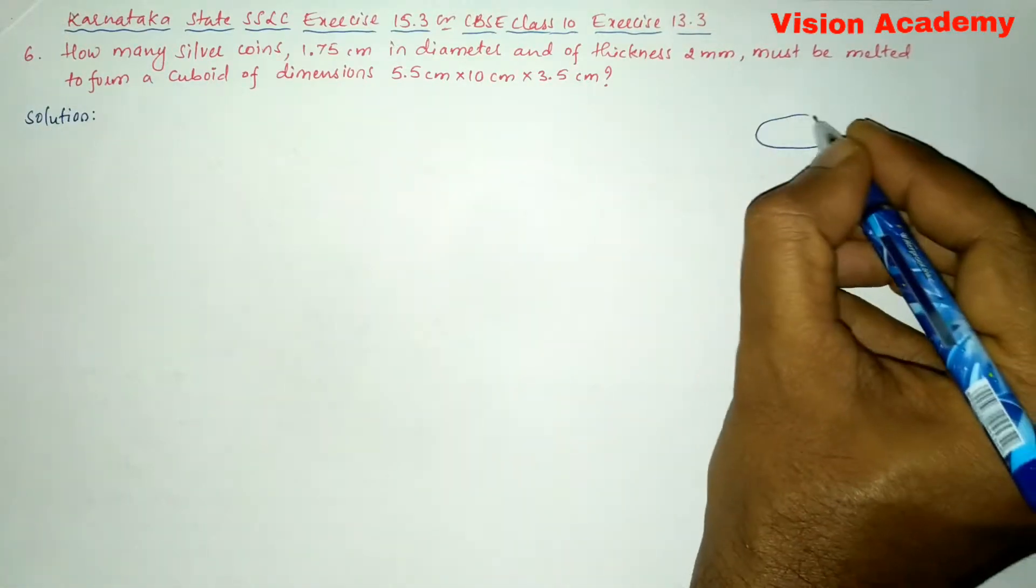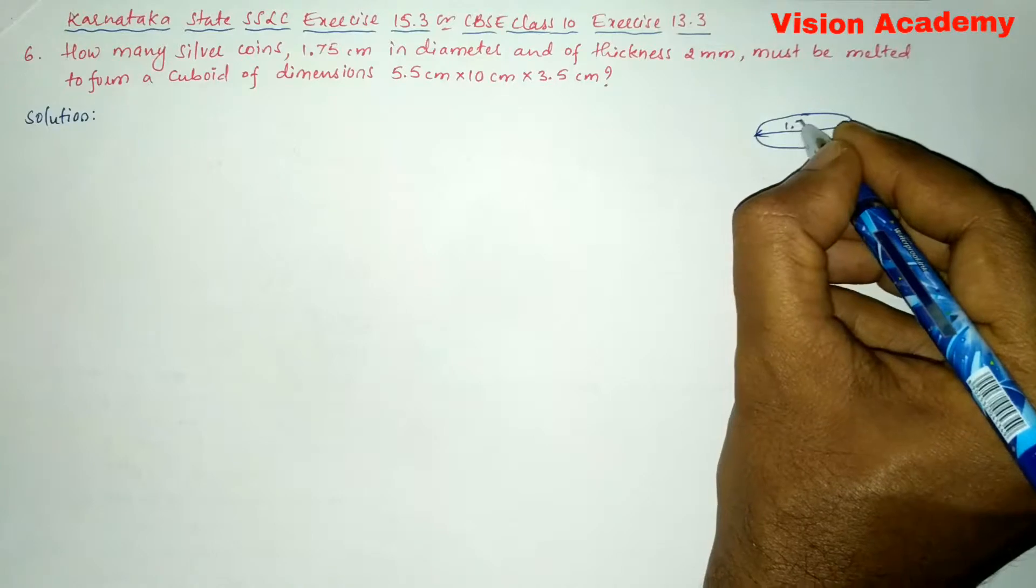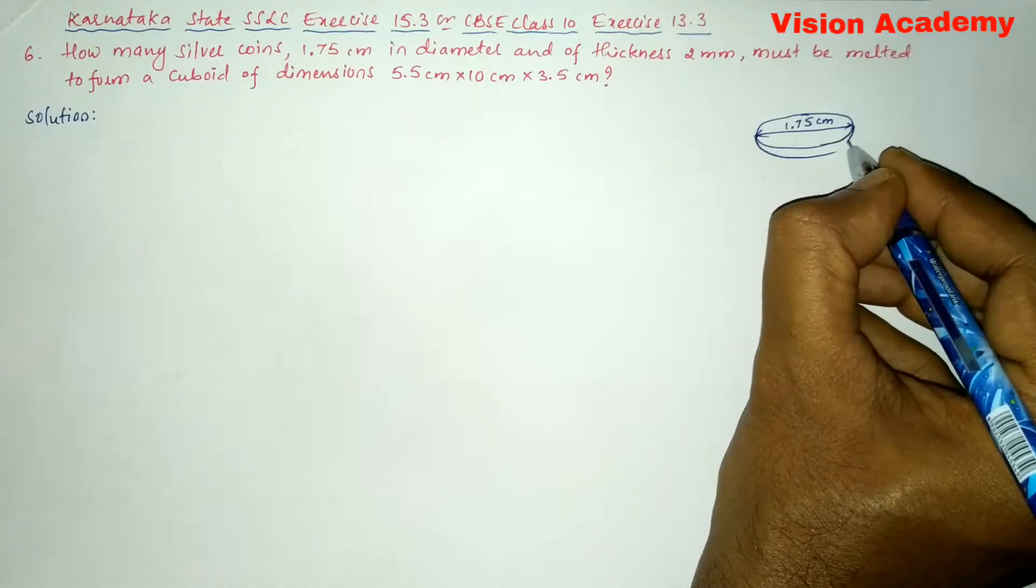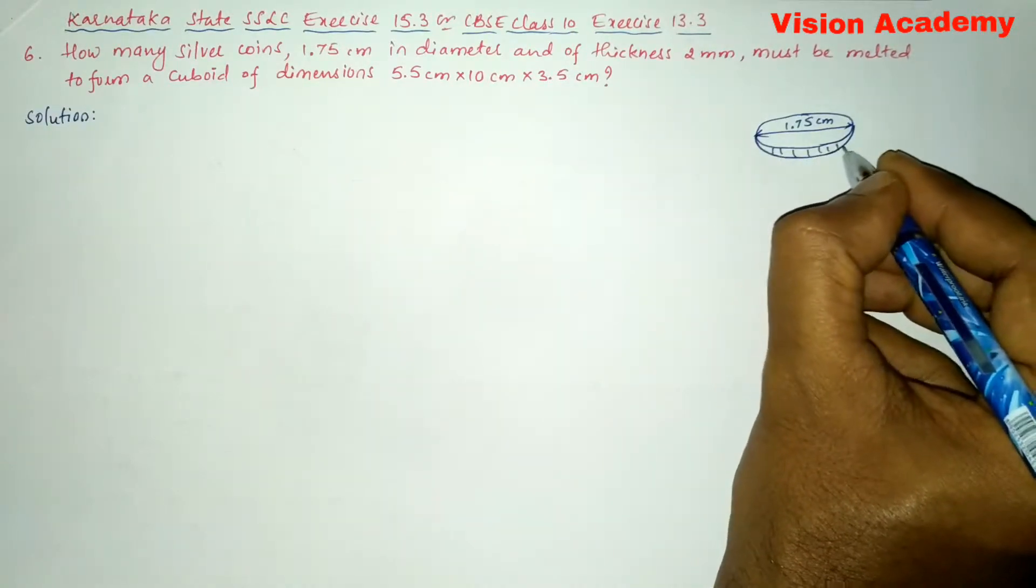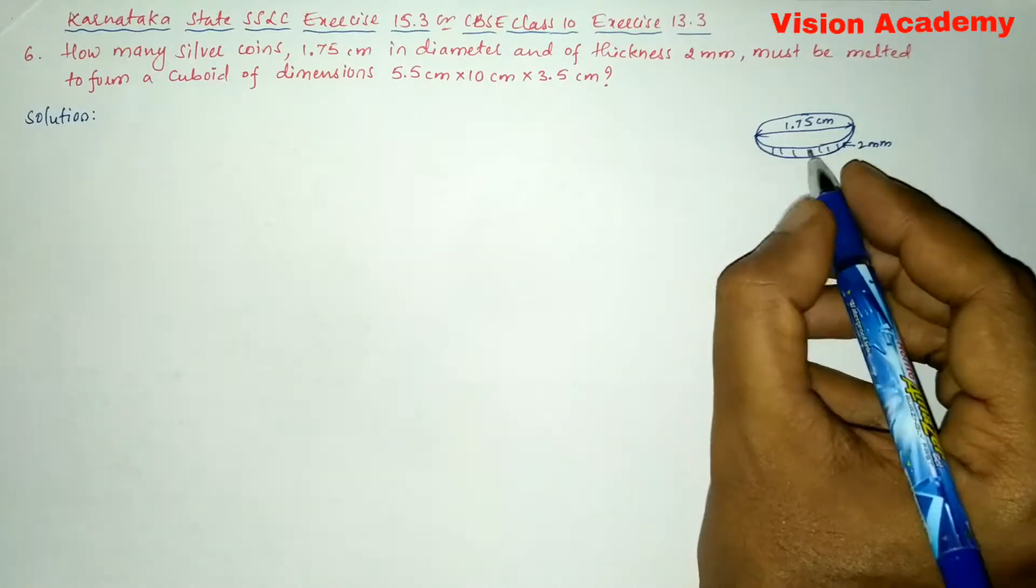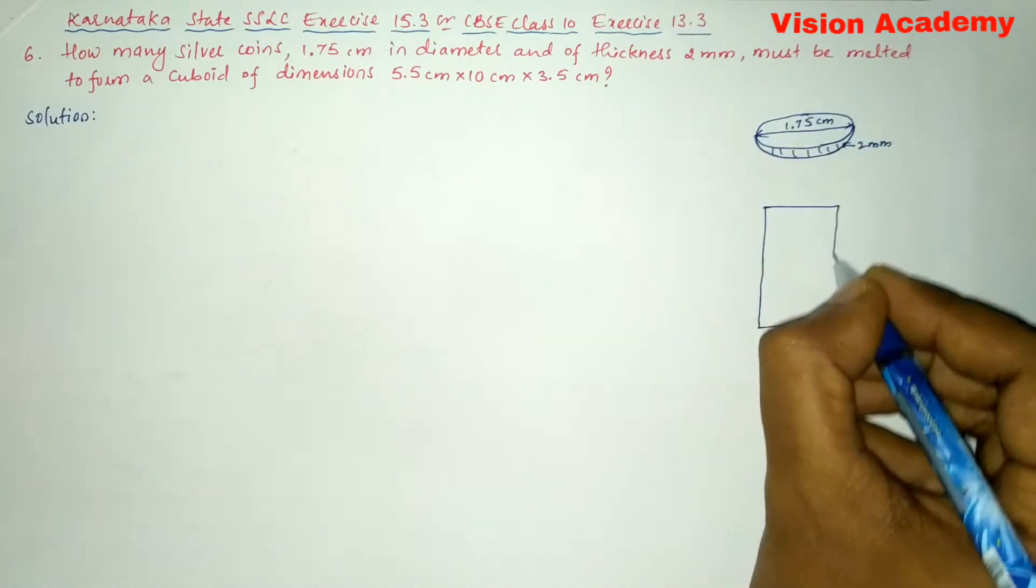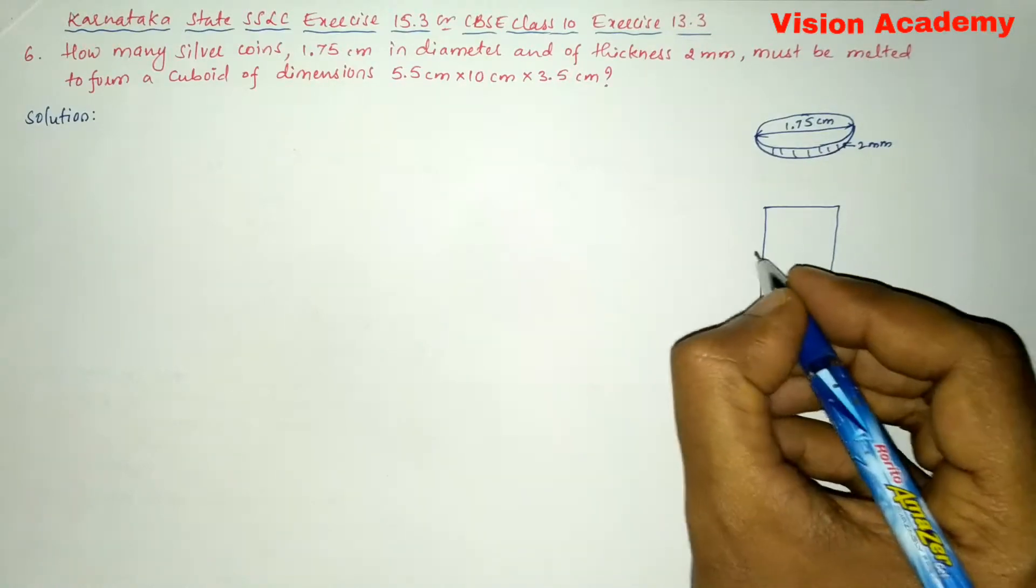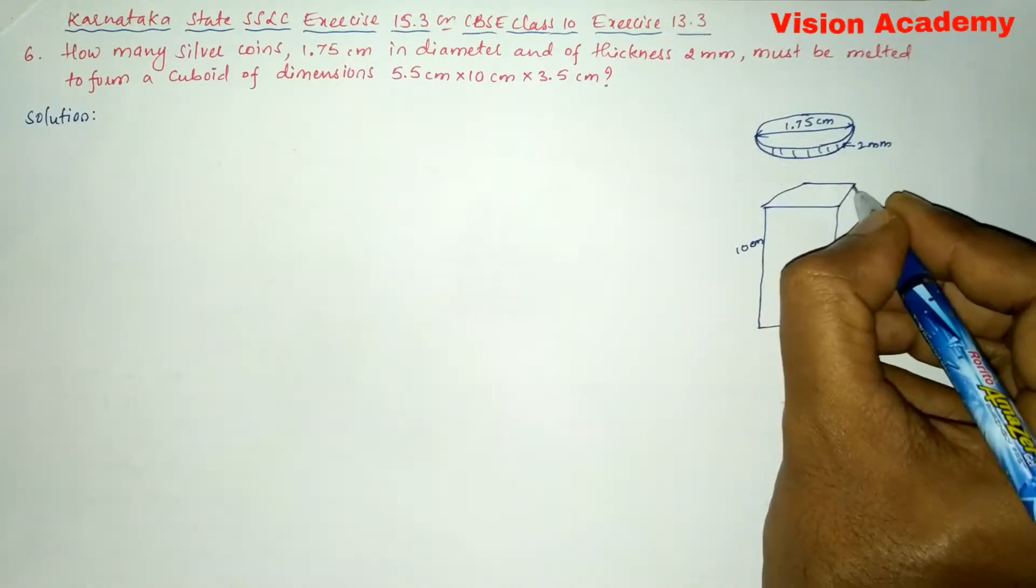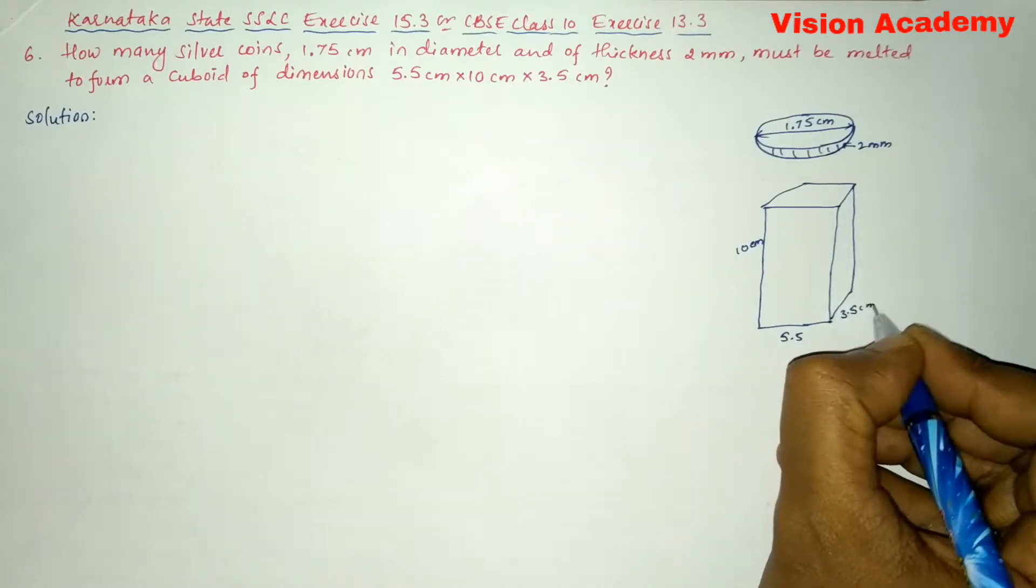So here let us consider this is the coin whose diameter is 1.75 cm and it has got certain thickness. This thickness is 2mm and we need to find how many such coins are required to form a cuboid whose dimensions are 10 cm × 5.5 cm × 3.5 cm.